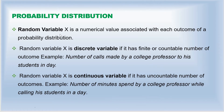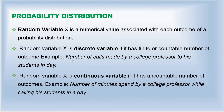The random variable can be a discrete random variable or a continuous random variable. A discrete random variable is a variable that has a finite or countable number of outcomes. For example, the number of calls made by a college professor to his student in a day can be 1, 2, 3, 4, or 5 and so on — it cannot be a fraction like 1.2 or 1.3. So the number of calls is the discrete variable because it takes only finite, countable whole numbers.